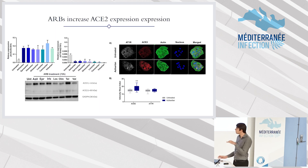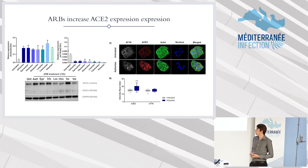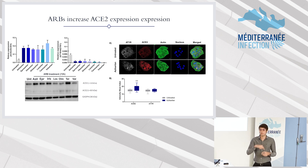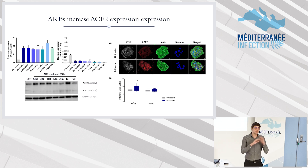So first, for the ACE2 receptor at the RNA level, we saw increased expression for all of the treatments, and a decrease of the AT1 receptor for all treatments too — that was expected because it's where the medicine binds. And at the protein level, we have four from seven treatments with ACE2 expression increased, and we also checked if this increase occurs at the surface level of the cell.